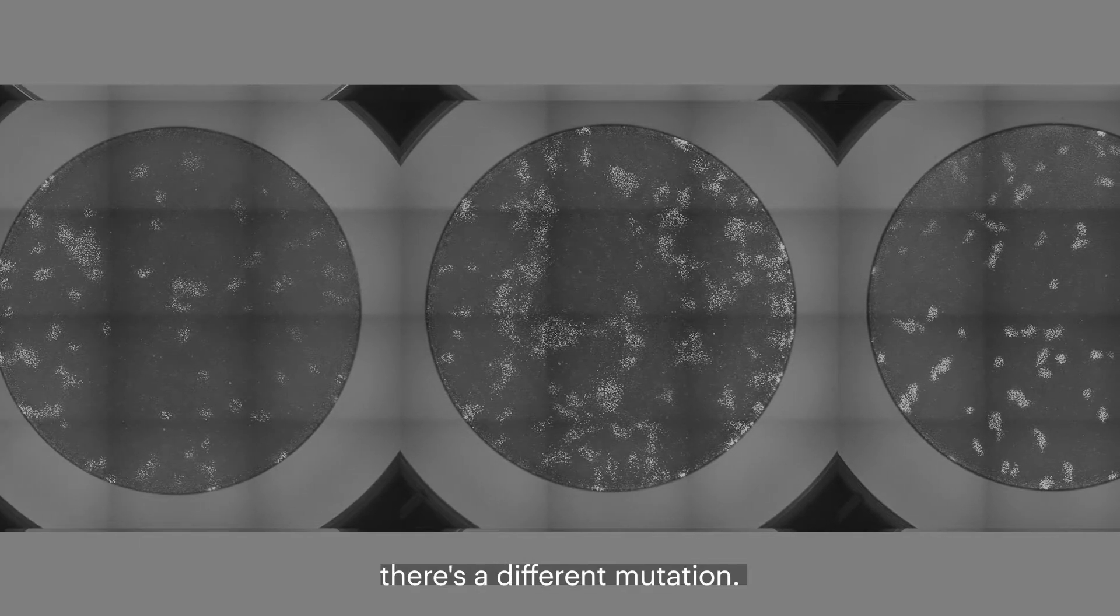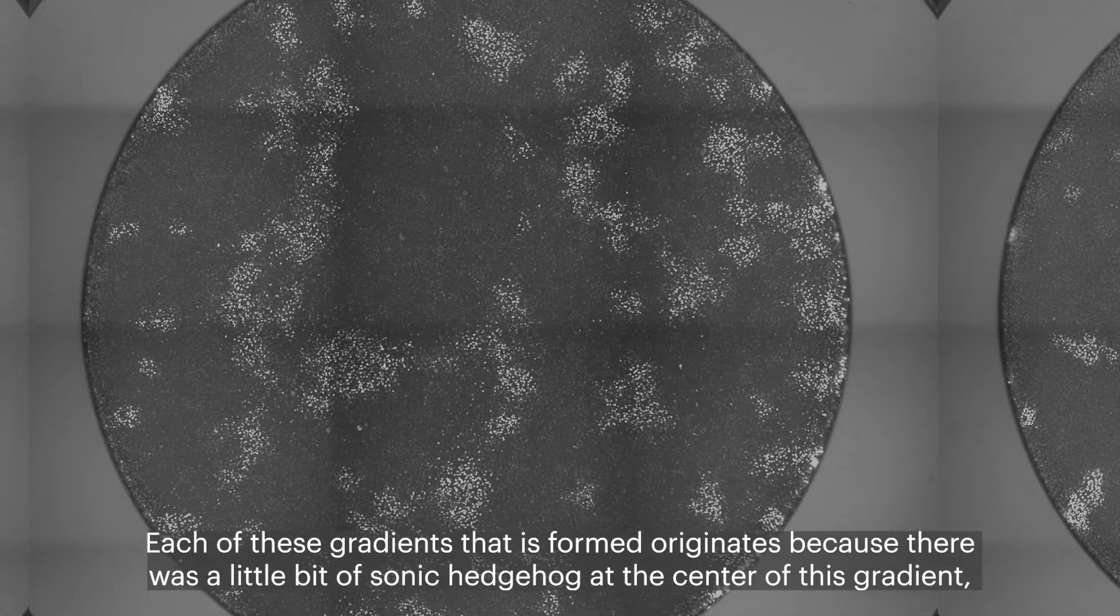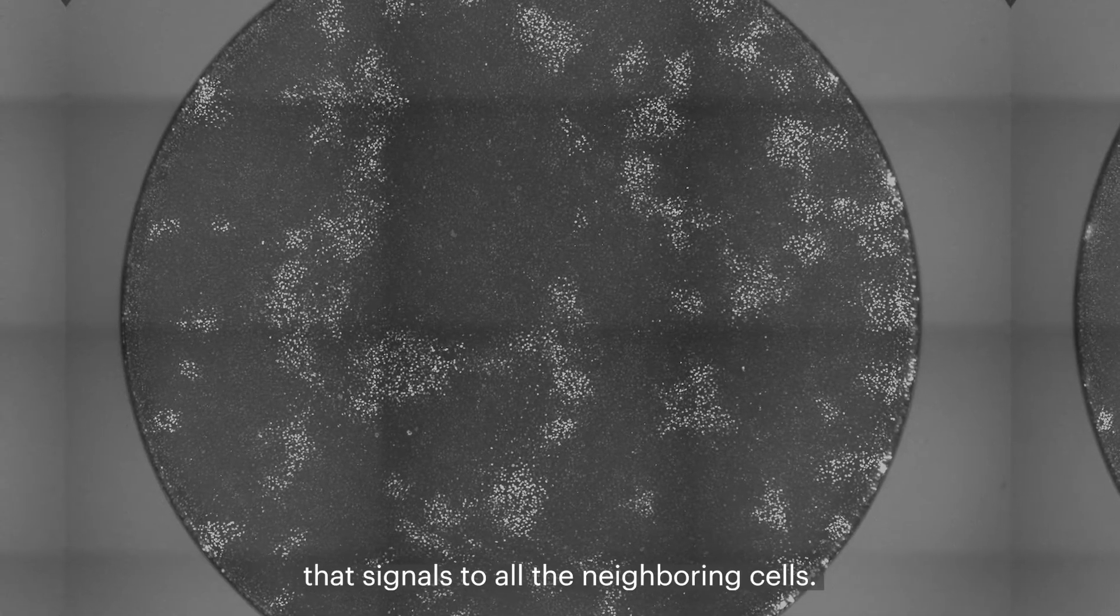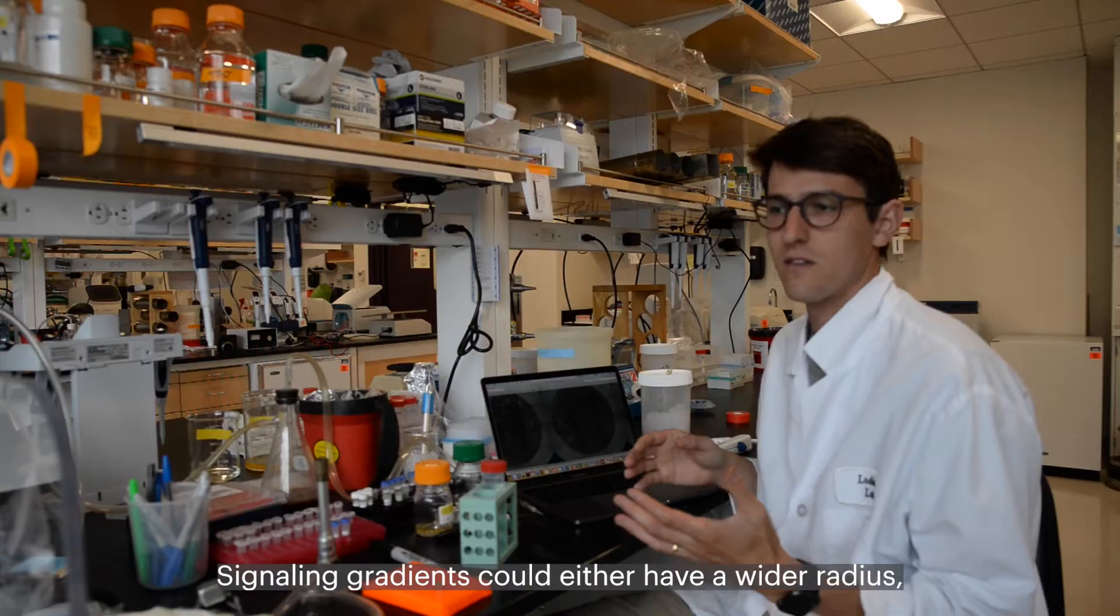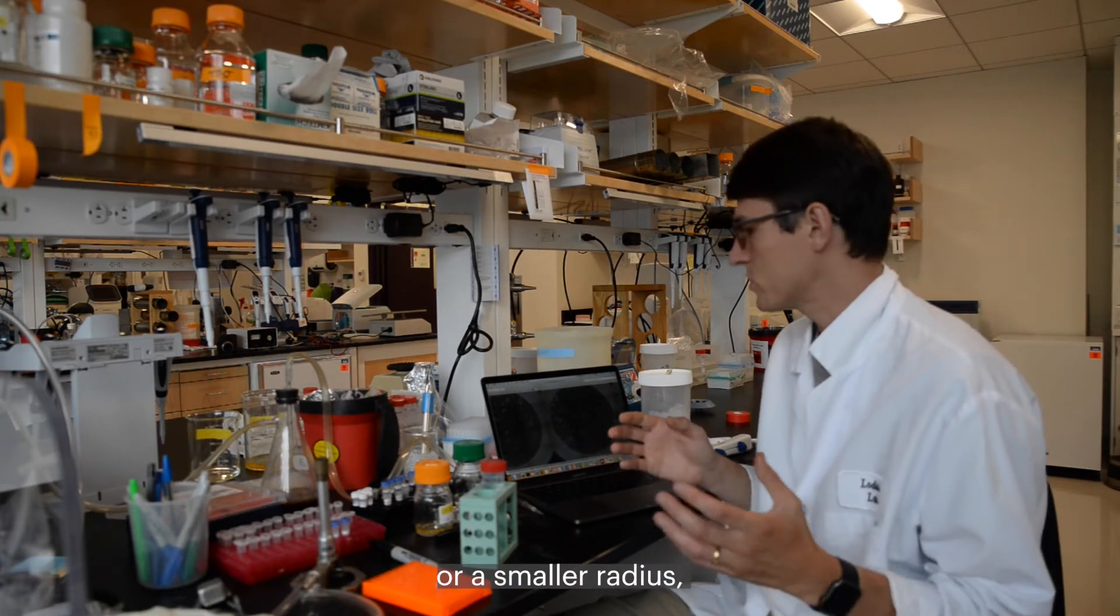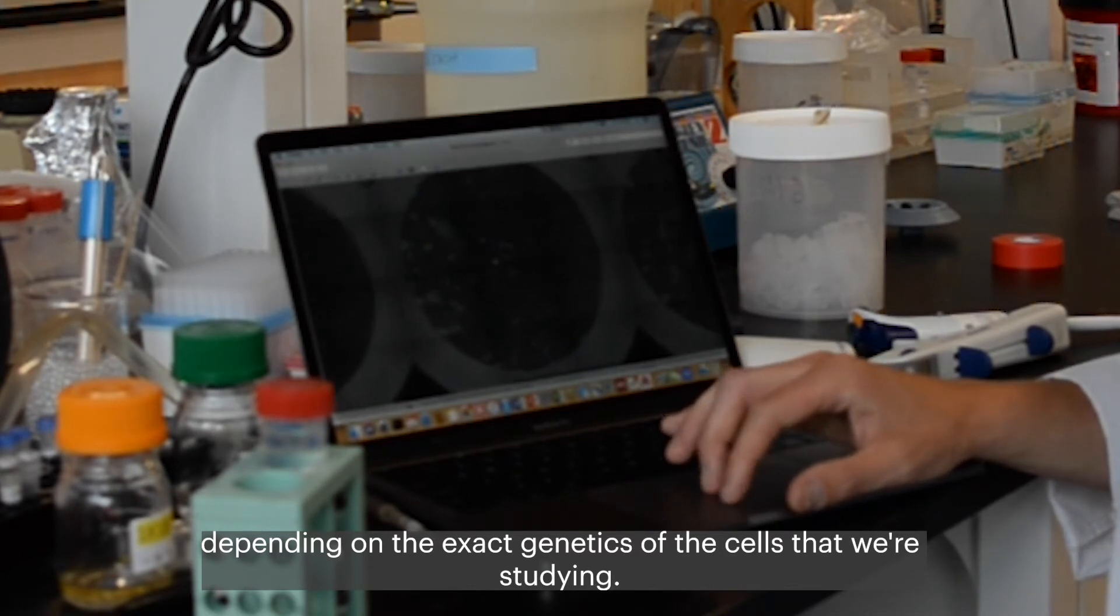So in each of these six wells, there's a different mutation. Each of these gradients that's formed originates because there was a little bit of sonic hedgehog at the center of this gradient that signaled to all of the neighboring cells. The signaling gradients could either have a wider radius or a smaller radius depending on the exact genetics of the cells that we're studying.